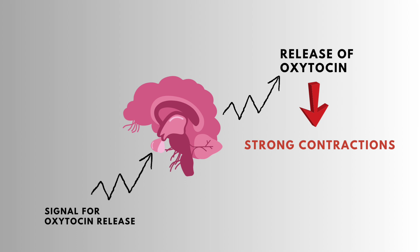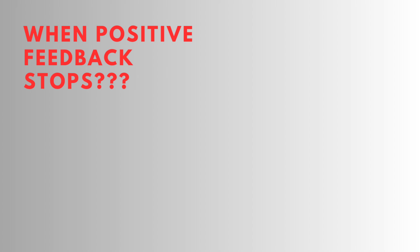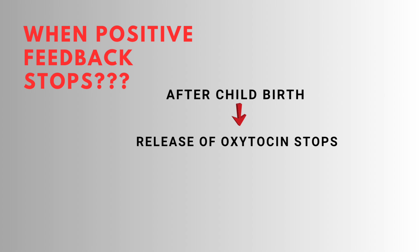Once oxytocin is released, it stimulates further stretching and more oxytocin release, creating a cycle. This results in increasingly forceful contractions, which are able to expel the baby. This cycle continues until the baby is born.